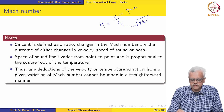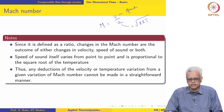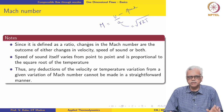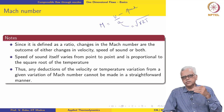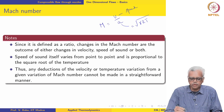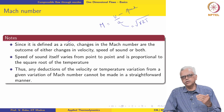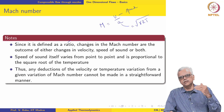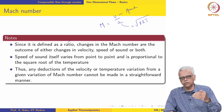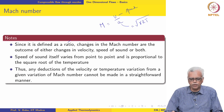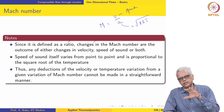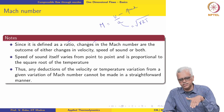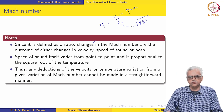Mach number is defined as a ratio — it is a very fundamental quantity in gas dynamics and compressible flow. A lot of care is required in drawing inferences from values of Mach number, primarily because it is a ratio of the local speed of the fluid divided by the speed of sound. Any change in Mach number can be accomplished by changing the velocity, by changing the temperature (which changes the speed of sound), or both.